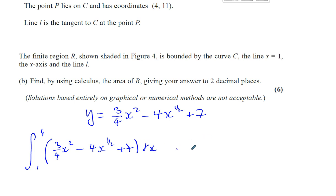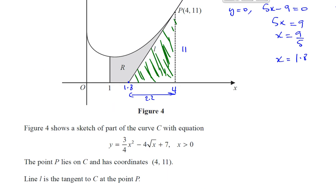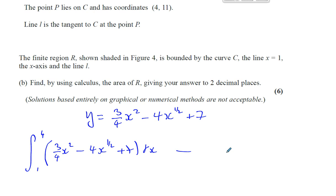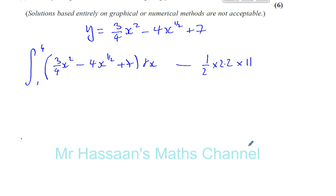And I've got to take away from that the area of the triangle. The area of the triangle is a half times a base times a height. So it's a half times 2.2 times 11. A half times 2.2 times 11. So let's now integrate this.